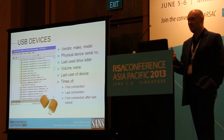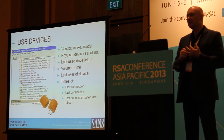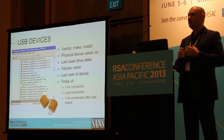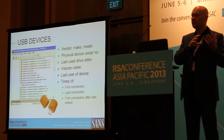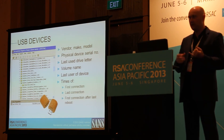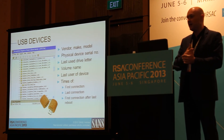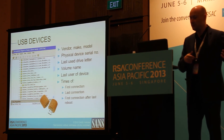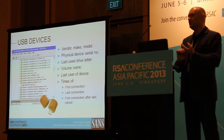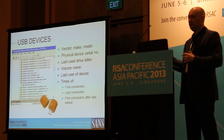USB devices. We talked before about how link files store information for USB devices, like the volume name and serial number. It turns out that every time you plug a USB device into a Windows machine, it stores information about that USB — some of it in the registry, some in log files Windows uses for driver configuration. When you pull this information out, you can get the vendor, make and model, the physical serial number, the volume name, when it was last used, when it was first connected, when it was first connected after the last reboot, and the users that used it.